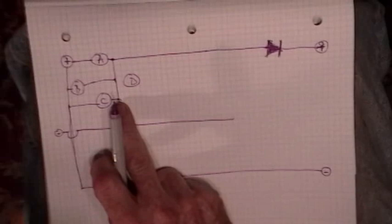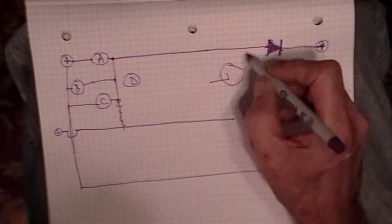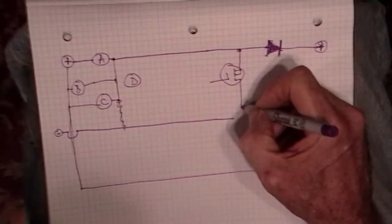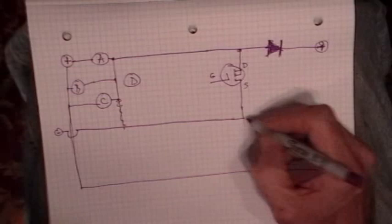So we need a switching element, and we said we were going to use a MOSFET. So we've got the drain, source, gate down to there.